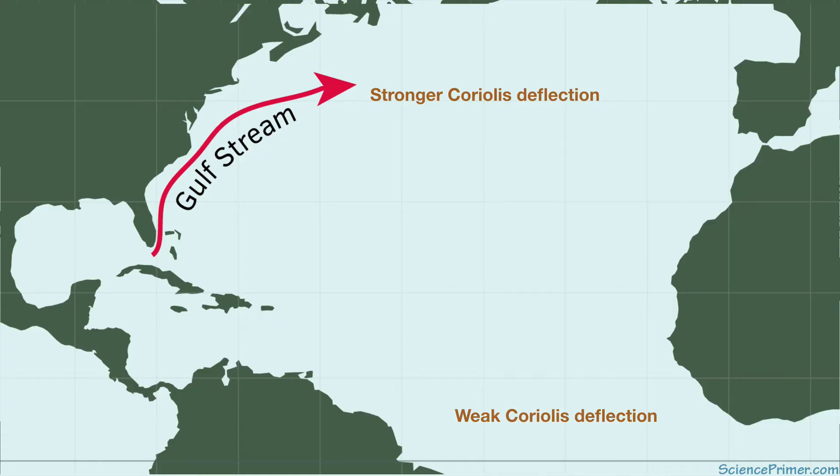Water particles moving west near the equator experience very little Coriolis deflection, allowing them to travel fairly straight across the basin until they reach a coastline, at which point they are forced to turn and move towards higher latitudes.